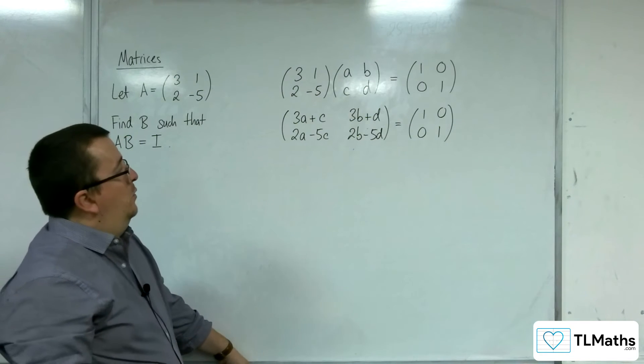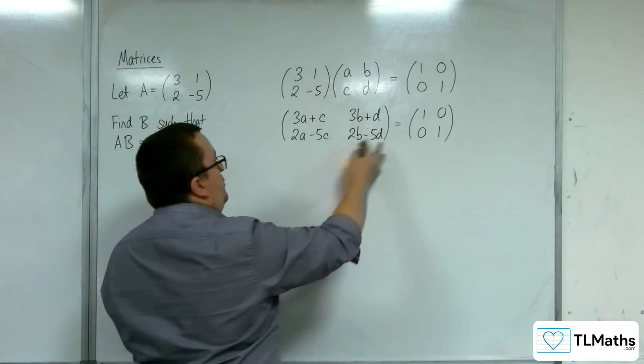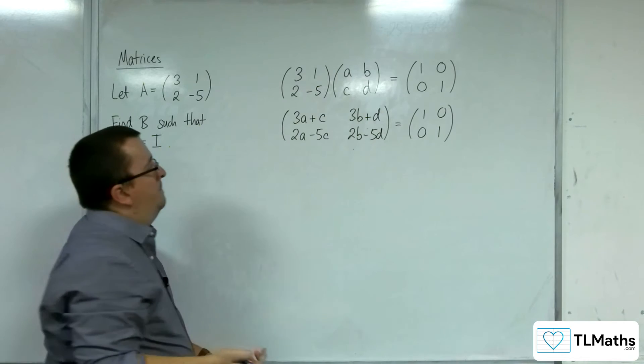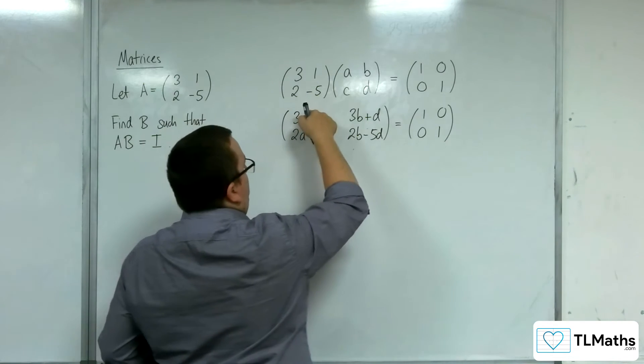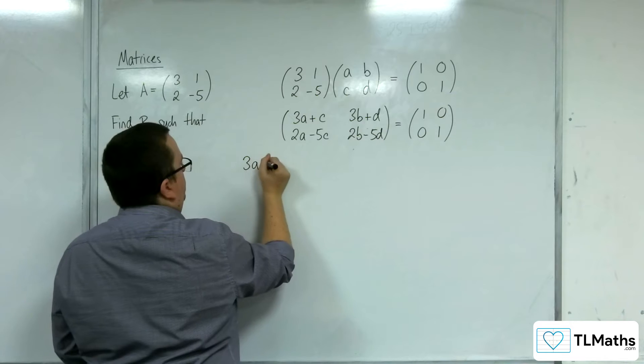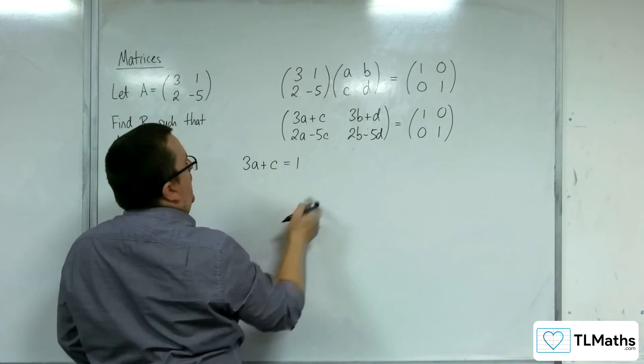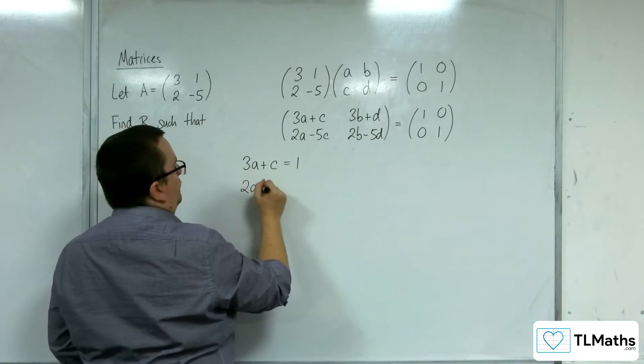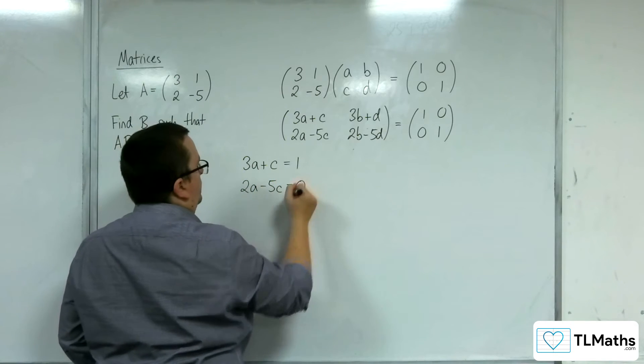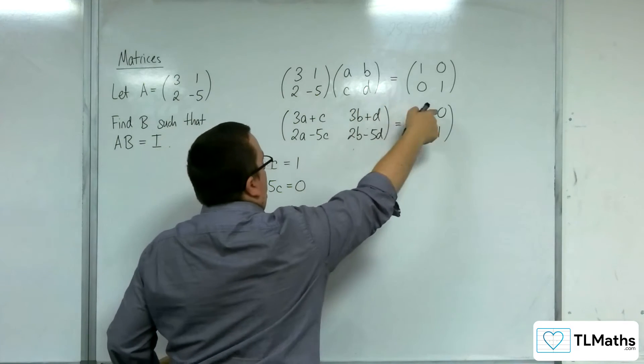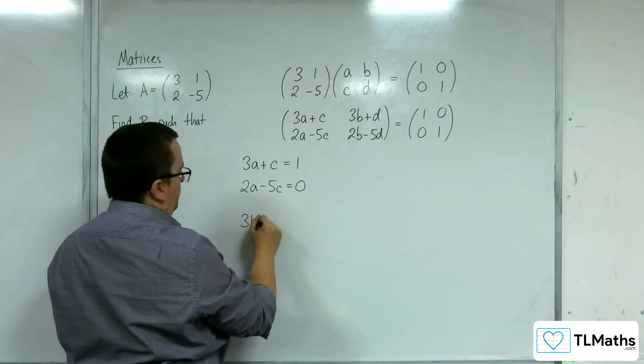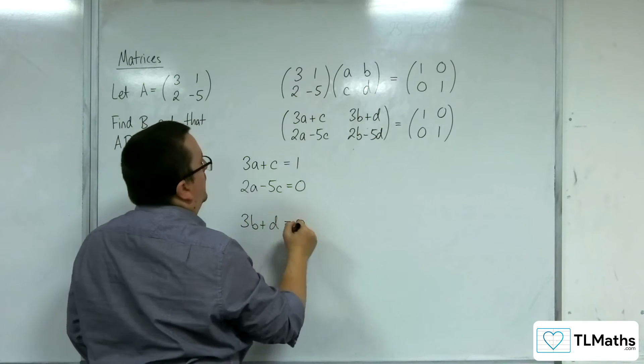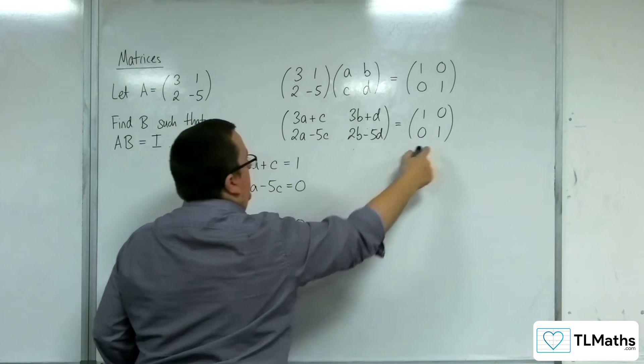So what we know, then, is that if these two matrices are to be the same, then the 3A plus C is going to have to be 1, and the 2A minus 5C is going to have to be 0. The 3B plus D has got to be 0, and the 2B minus 5D has got to be 1.